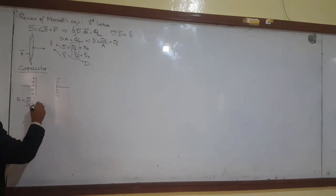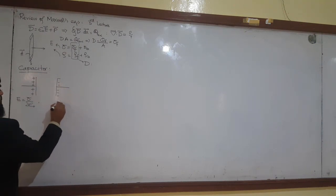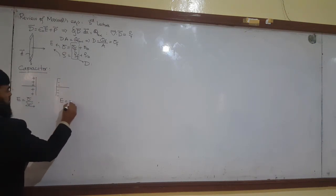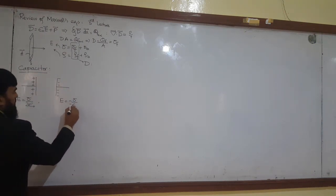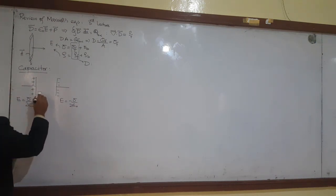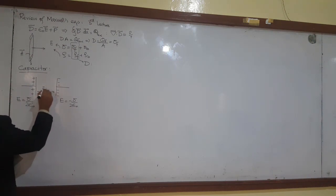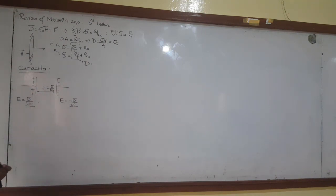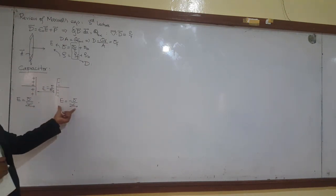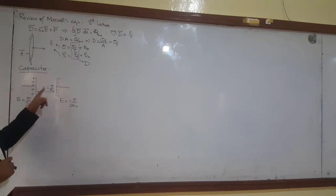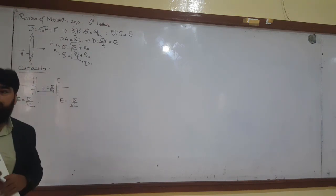The total field E between the plates is the combination of these two fields — they add up — giving E equals sigma over epsilon naught. This is the field in free space. This is the permittivity of free space, epsilon naught.